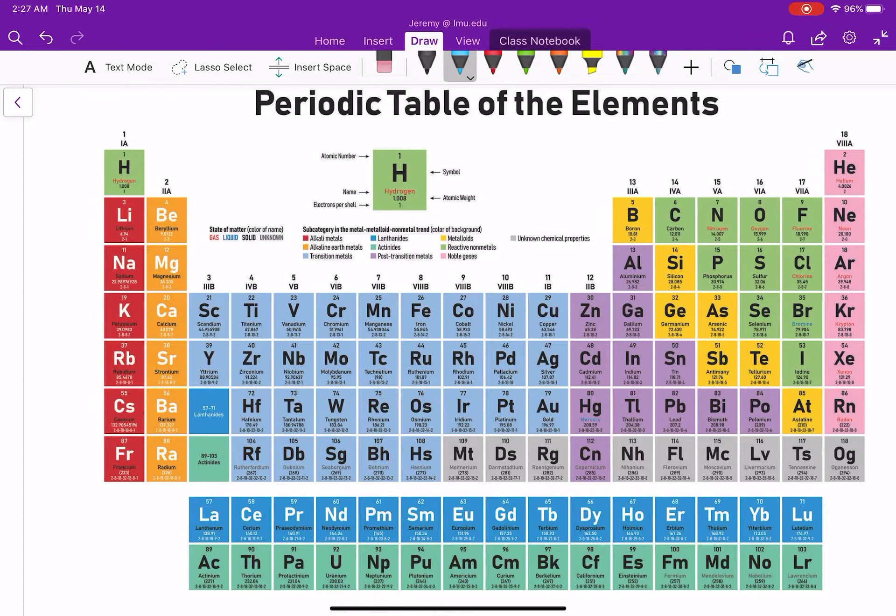So here's our periodic table. There's a new numbering system of our columns where they're numbered 1, 2, 3, 4, 5, all the way up to 18. The older system had 1a, 2a. These were all 3, those were all 3b. 3a, 4a, 5a, 6a, 7a, and 8a.